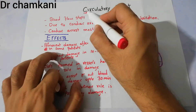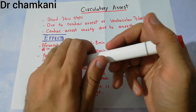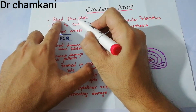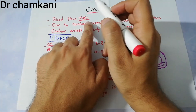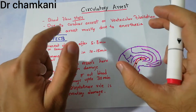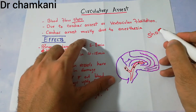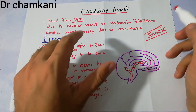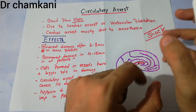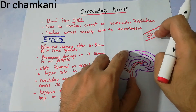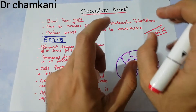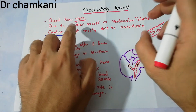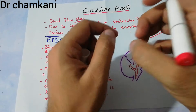In this lecture, we are going to talk about circulatory arrest. Circulatory arrest is simply the stoppage of blood flow — a condition in which the blood flow stops completely. It is different from shock, which we have been discussing in detail. Shock is not the stoppage of blood flow; it is basically the inadequate supply of nutrients to the tissue. Blood is flowing normally, but the supply of nutrients to the tissue is decreased. In circulatory arrest, there is complete stoppage — the blood flow completely stops.